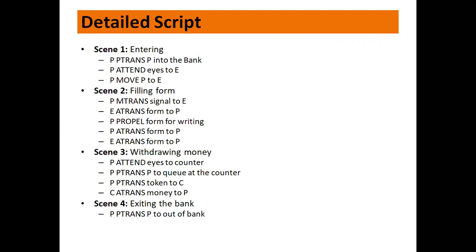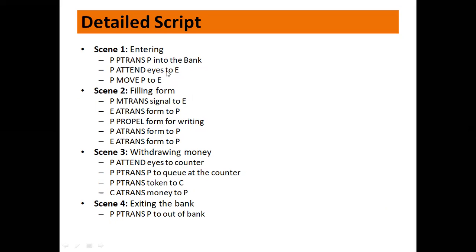Scene 1 — customer entering the bank: P-trans represents the physical movement of the person into the bank; P attends eyes to E, meaning P searches for the employee, then moves towards the employee. Scene 2 — filling up the form: customer M-trans, that is, signals to the employee; employee hands over the form to the customer; customer uses a pen to fill up the form; then hands the completed form back to the employee.